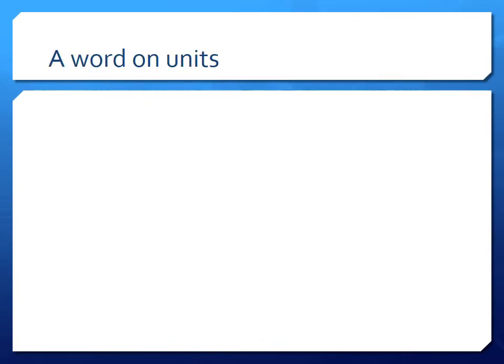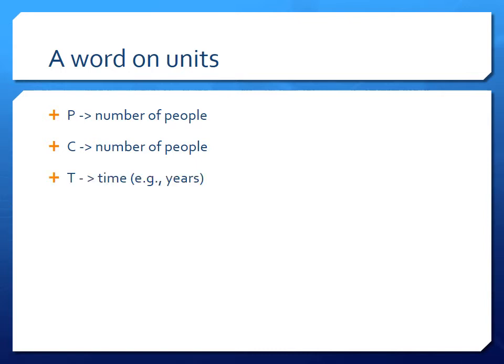A word on units: population is measured in number of people, and carrying capacity has those same units — it's also a number of people, just a maximum. Time is given in years. The other parameter in the logistic equation is the little k — the constant of proportionality — which indicates that population growth is proportional to the population present. More people leads to higher population growth because there's more people reproducing. Think about what the units of k should be.